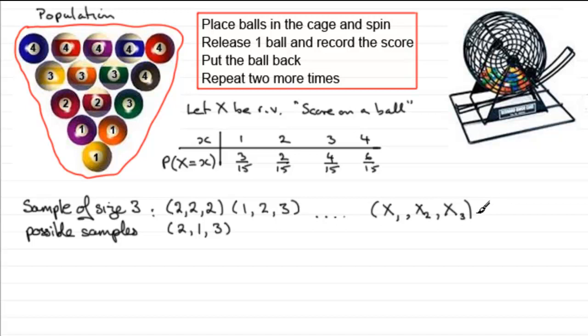Now when we do simple random sampling, what we've got to make sure is that every one of these samples that we take has an equal chance of being selected.